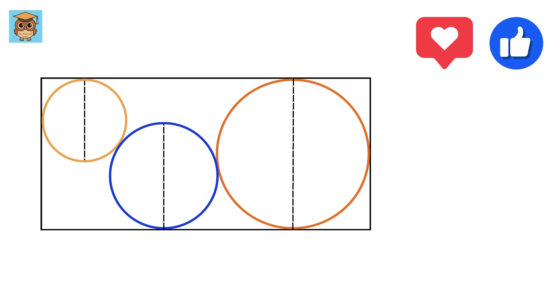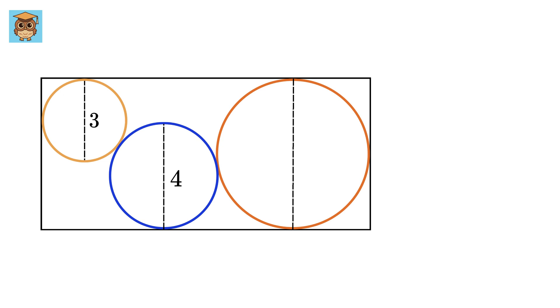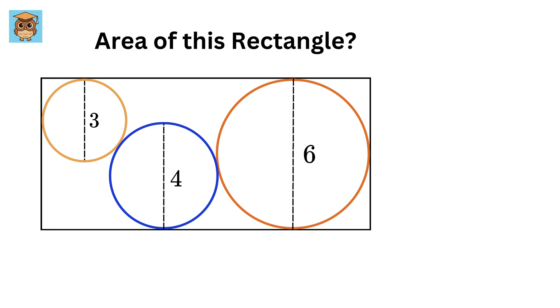This math question is going viral on social media. You have a rectangle with three circles whose diameters are 3, 4, and 6 centimeters. The question is: what is the area of this rectangle?